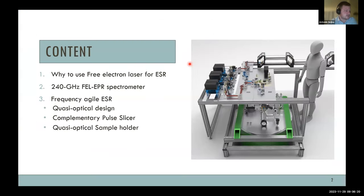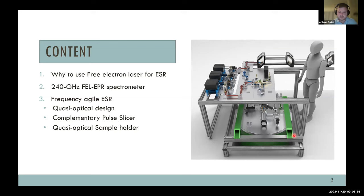This presentation is around 25 minutes. I'd like to speak about why we want to use a free electron laser as the source for electron spin resonance. This is not new — a spectrometer operating at 240 GHz was already built in 2012. I'll introduce it because a lot of the technology we're currently developing comes from that old spectrometer. In the second half, I'll focus on our new FEL spectrometer, which is still under development, but we've already developed some key components and published on them.